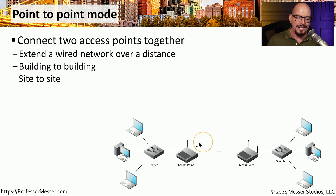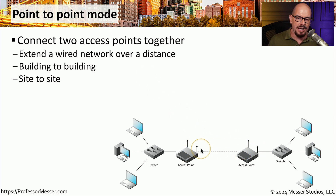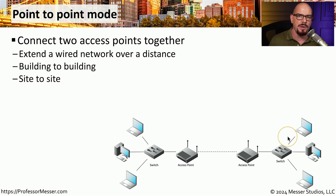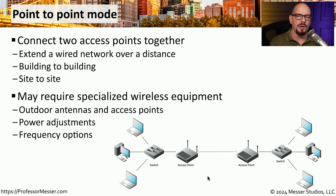Some wireless access points allow you to connect two devices directly to each other over a point-to-point mode. This mode is commonly used to connect over larger distances, for example one building connecting to another building. You could have an access point in one house connected to a switch with all internal devices on that switch, and the same configuration in another home, with all those networks connected over point-to-point mode. Not all access points support this, so you'll want to confirm that both the software and hardware support point-to-point and can transmit over that extended distance.